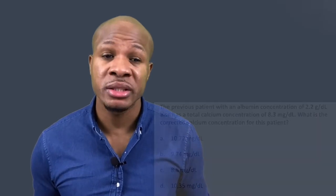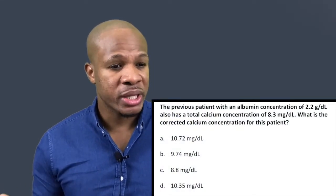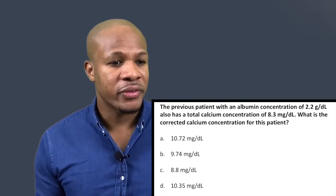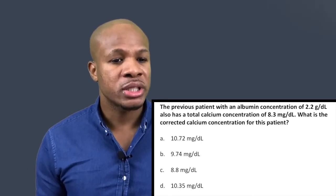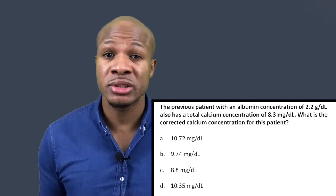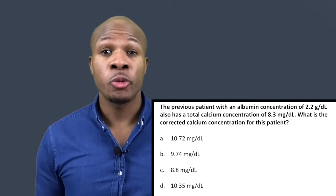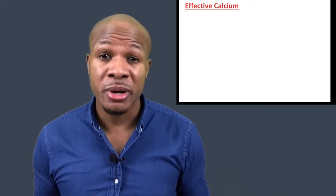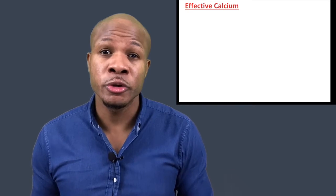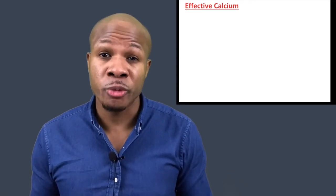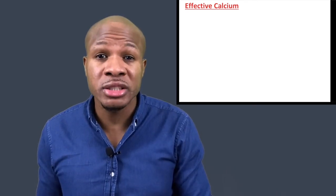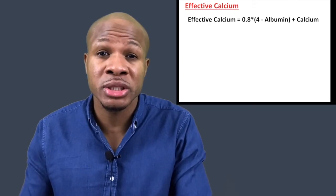Question number three: the previous patient with an albumin concentration of 2.2 grams per deciliter also has a total calcium concentration of 8.3 milligrams per deciliter. What is the corrected calcium concentration? This is the same patient from question two. Calcium is also a highly protein-bound chemical, so we need an empirical equation to correct for low albumin. However, the corrected concentration equation for calcium is completely different from the one for phenytoin, so unfortunately we have to memorize another equation.